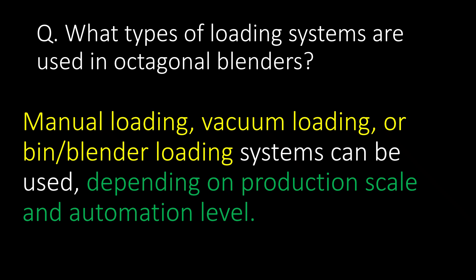What types of loading systems are used in octagonal blenders? Manual loading, vacuum loading, or bin/blender loading systems can be used depending on production scale and automation level.